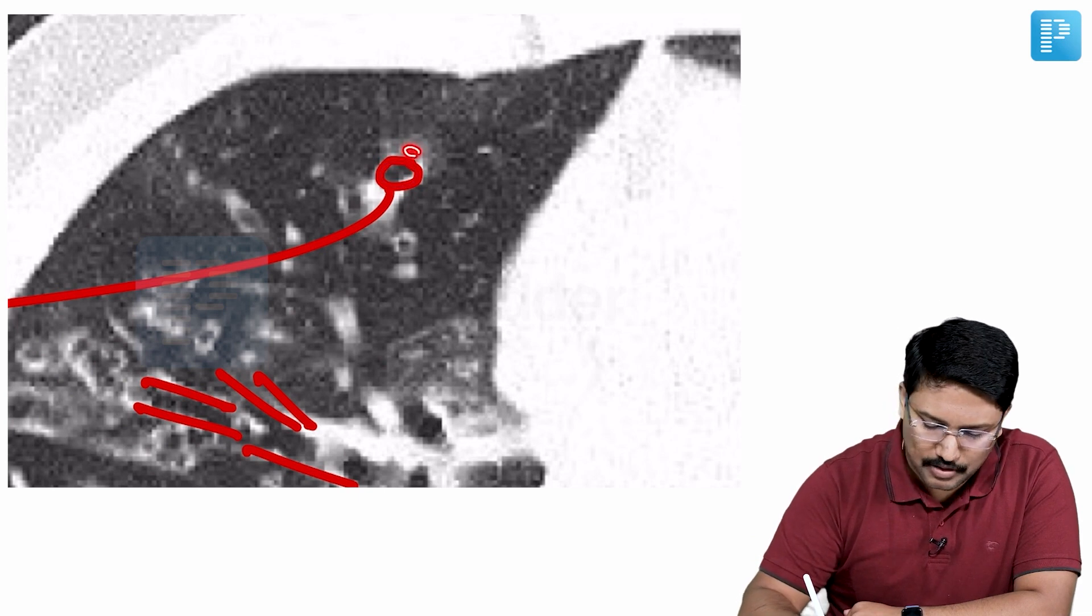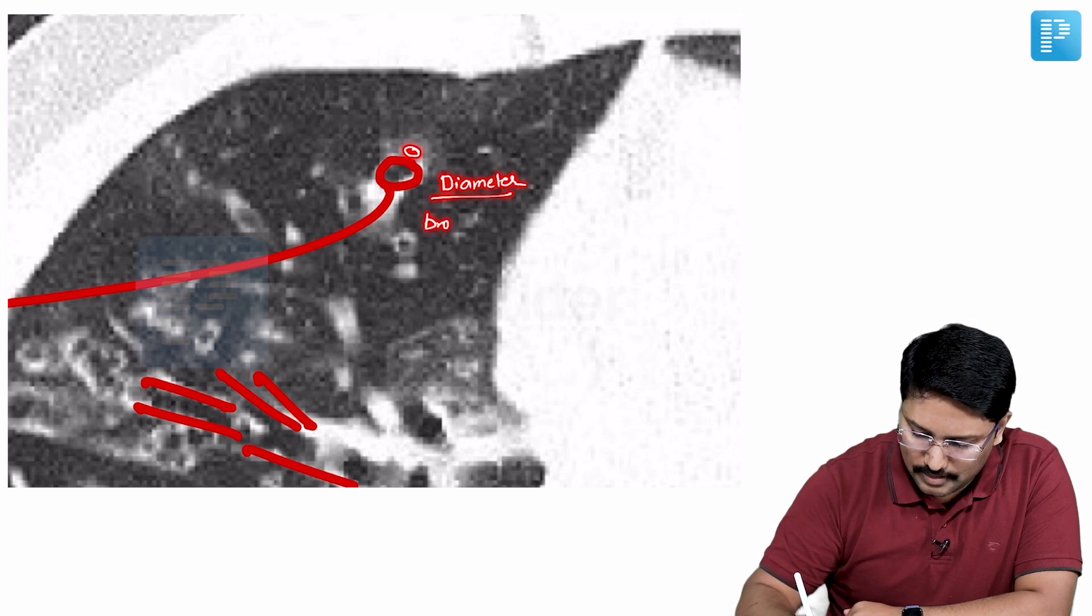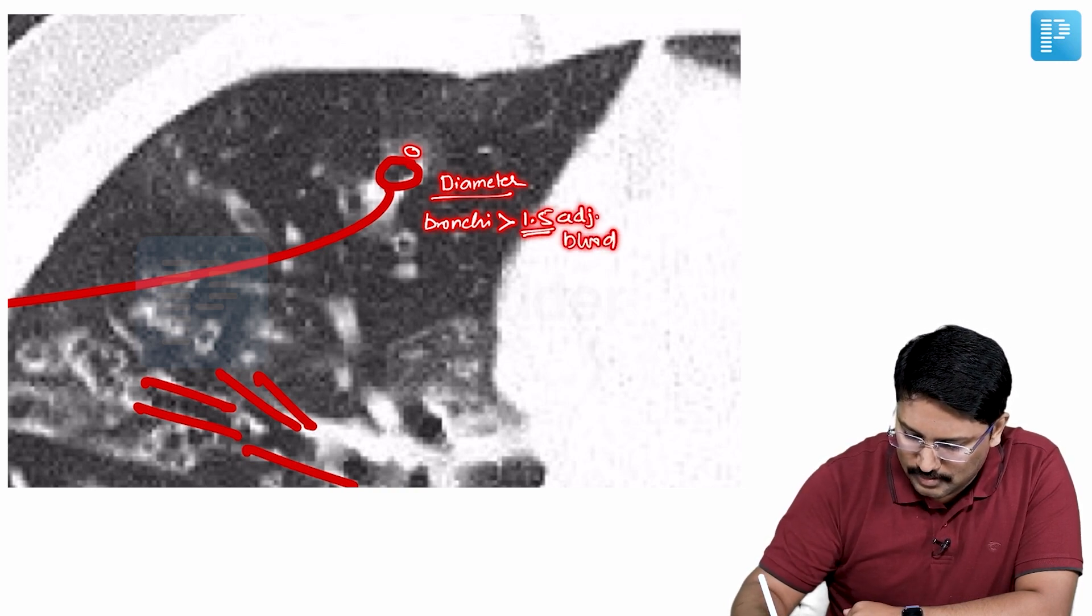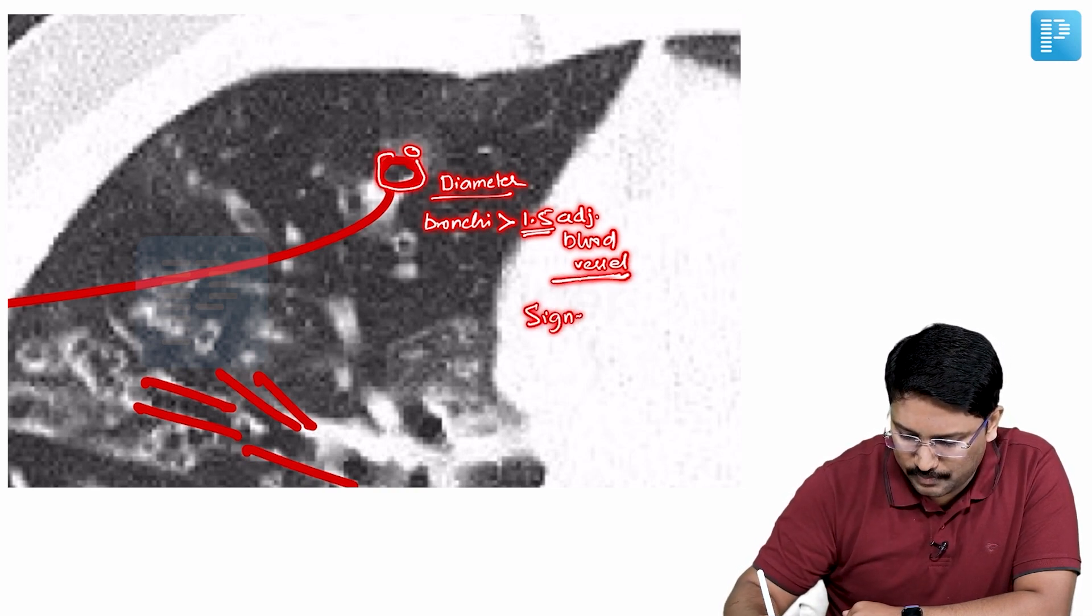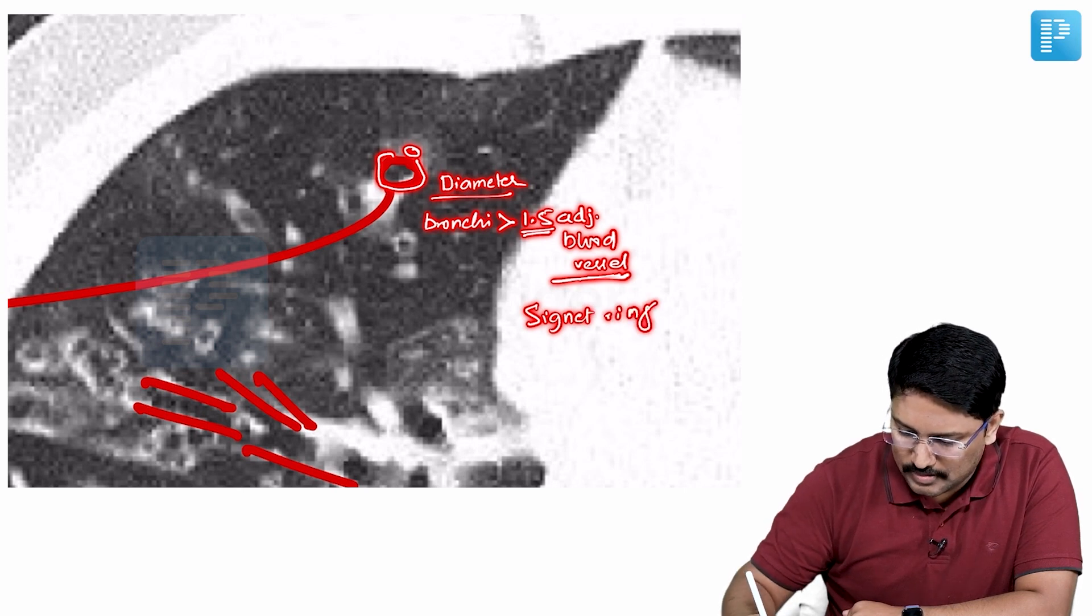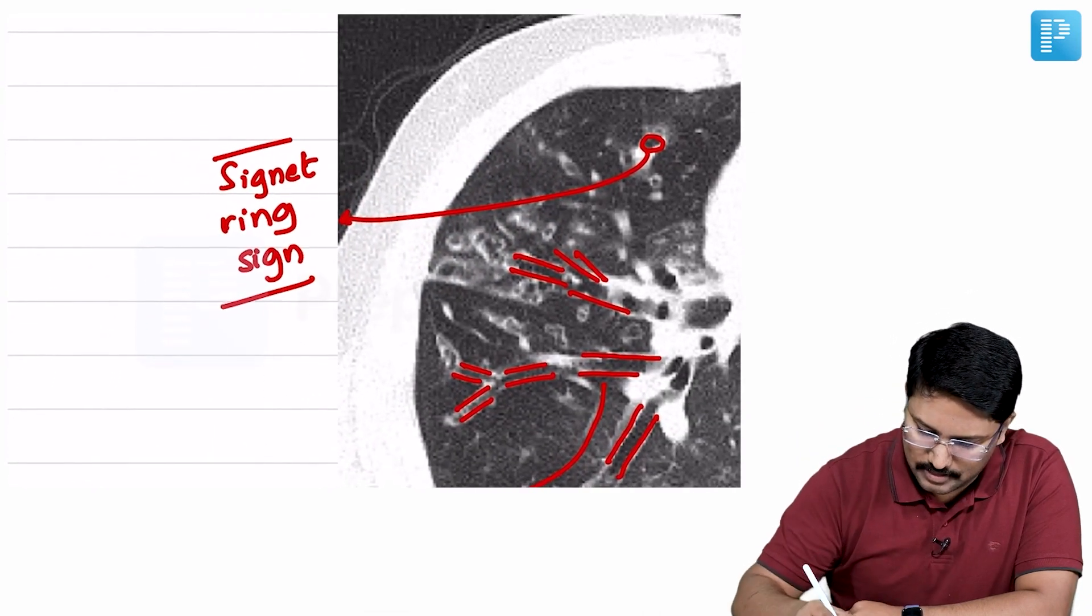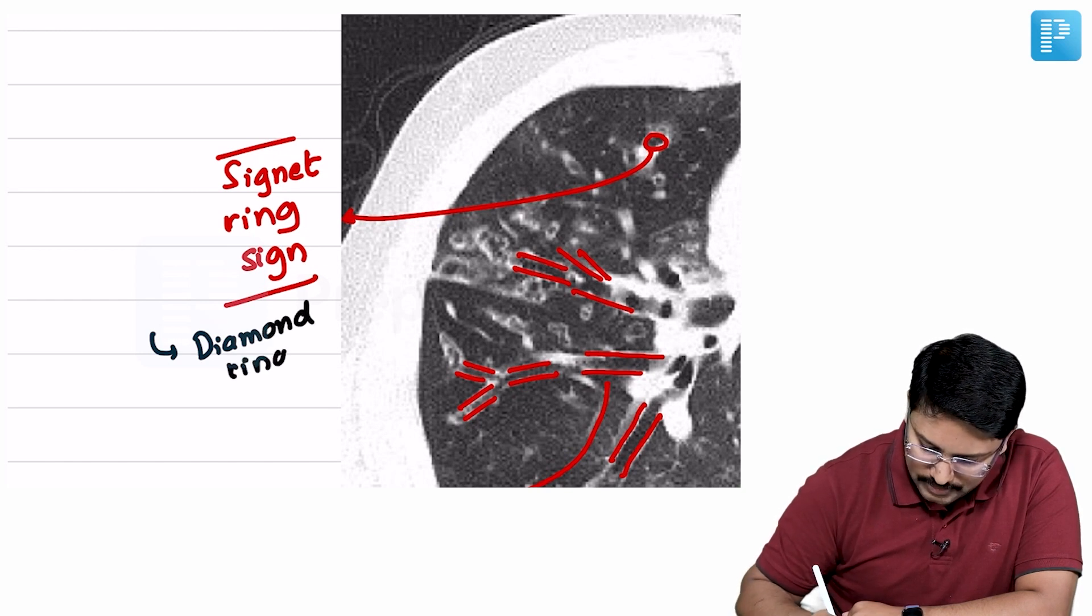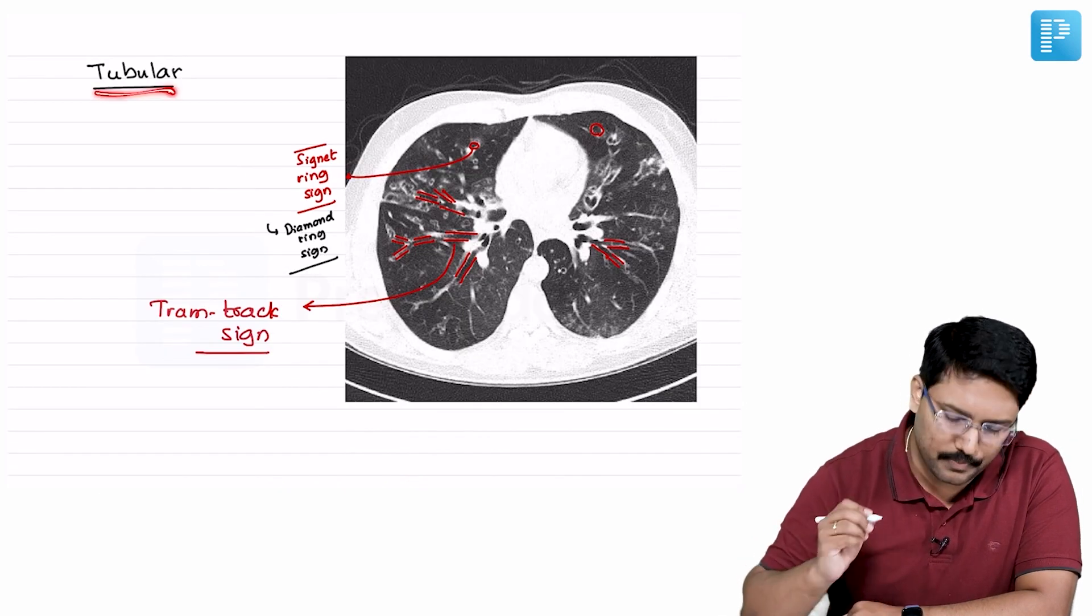So when you look at an adjacent or accompanying blood vessel, when the diameter of the bronchi is more than one and a half times the diameter of the adjacent blood vessel, it looks like a diamond ring. When it is present we say the signet ring sign is positive and it looks like a diamond ring. So some books calling this signet ring sign also call it diamond ring sign. Both of these are signs of tubular bronchiectasis specifically.